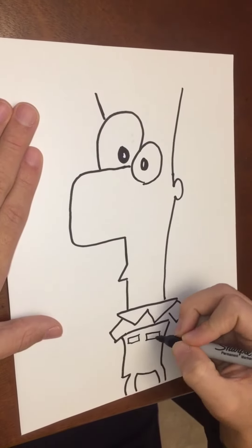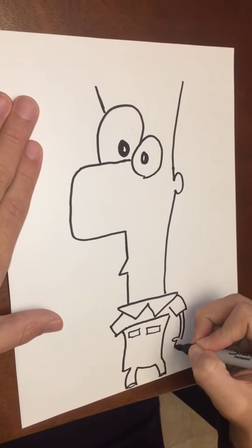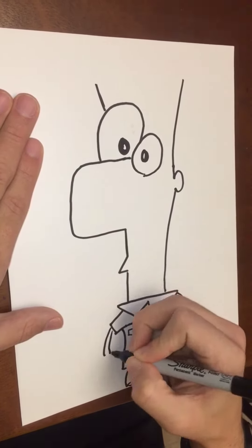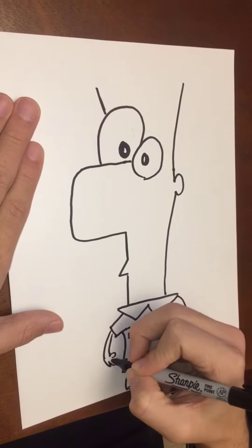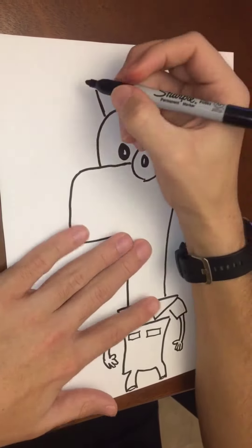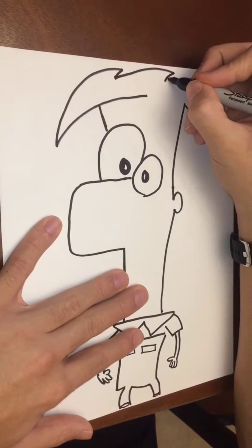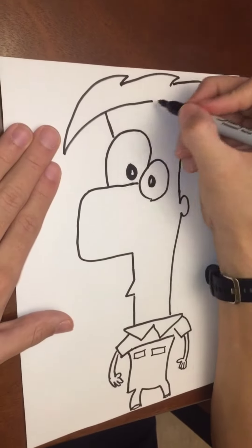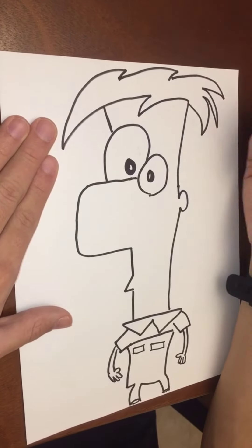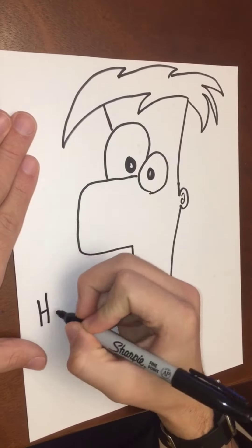We're gonna go ahead and give him some arms - that'll be the right arm of Ferb, left arm of Ferb. Spiky hair, gonna drop that down right there. And this is how to draw Ferb!